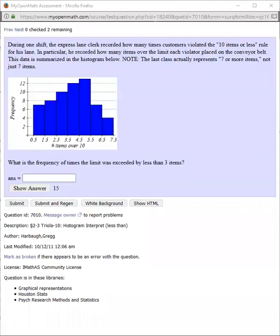Okay, so for this question we get another histogram and they're asking: what's the frequency of the times the limit was exceeded by less than three items? So I don't want to include three.